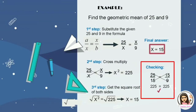Let's check if our answer is correct. We cross multiply 25 over 15 and 15 over 9: 25 multiplied by 9 equals 225, and 15 multiplied by 15 equals 225. Both products are equal, confirming x equals 15 is correct.